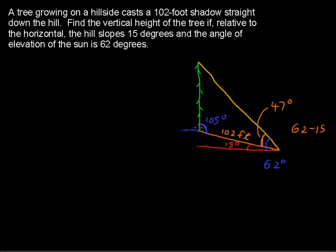That's the angle the tree makes with the downslope of the hill, right? 90 degrees plus another 15 degrees, because we're told that the hill has a slope of 15 degrees.